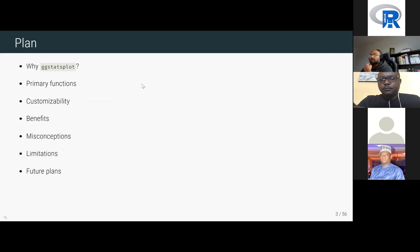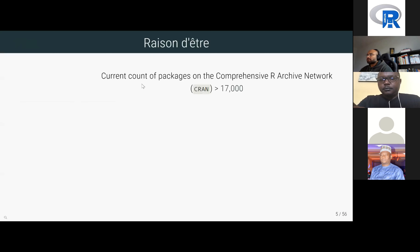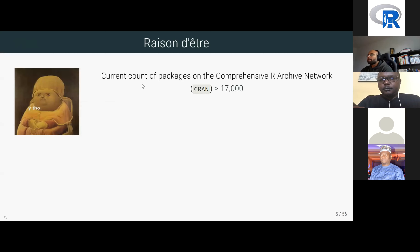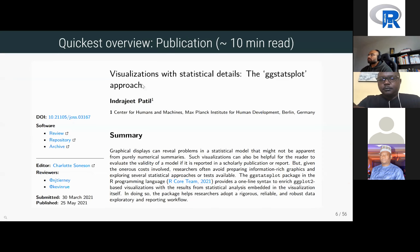Here's the plan: I want to talk about why this package exists, its primary functions, how customizable it is, its benefits, misconceptions about it, and its limitations. Why this package? Given that there are currently over 17,000 R packages, there has to be a good reason to develop a new one. The short answer is that ggstatsplot is designed to give you information-rich plots with important statistical details. It is suitable for faster exploratory data analysis and can provide visualizations for scholarly publications. The quickest way to read the philosophy is to read the associated publication, which takes about 10 minutes.